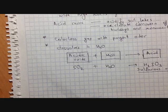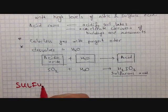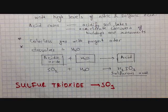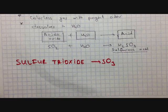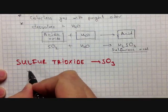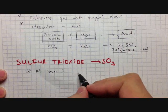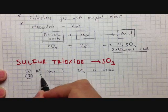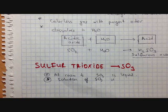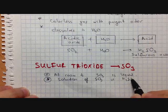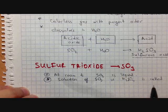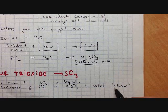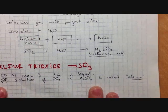Now let's move to the second oxide: sulfur trioxide, formula SO₃. At room temperature, sulfur trioxide is a liquid. A solution of sulfur trioxide in sulfuric acid is called OLEUM (O-L-E-U-M).